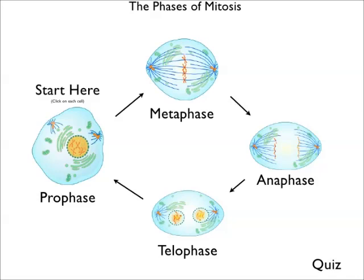During metaphase, chromosomes align at the middle of the cell between the two poles and the microtubules grow long enough to attach to the chromosomes at their centromeres. That's metaphase.